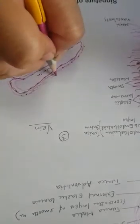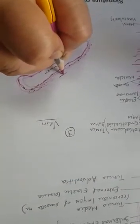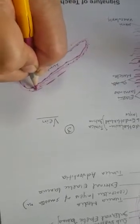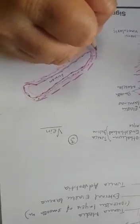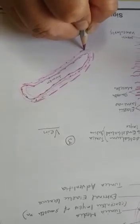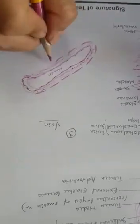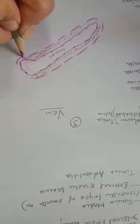Tunica media comprises of smooth muscles which are only in two or three layers, so you will draw smooth muscle layers here.